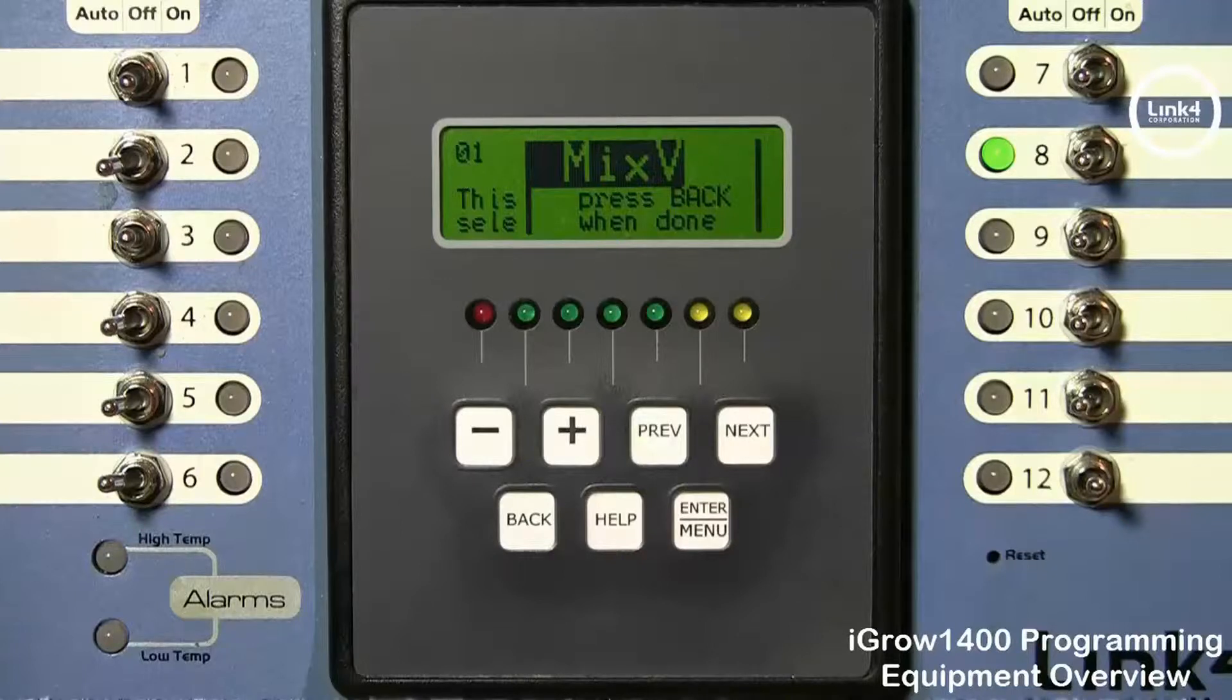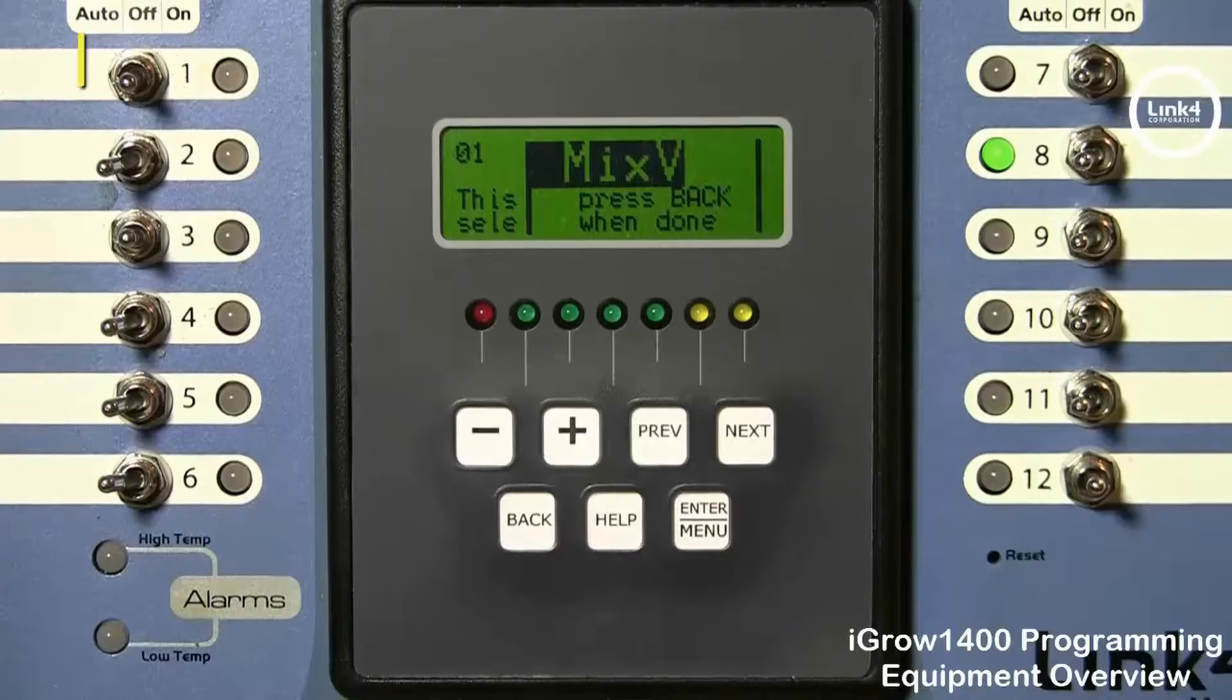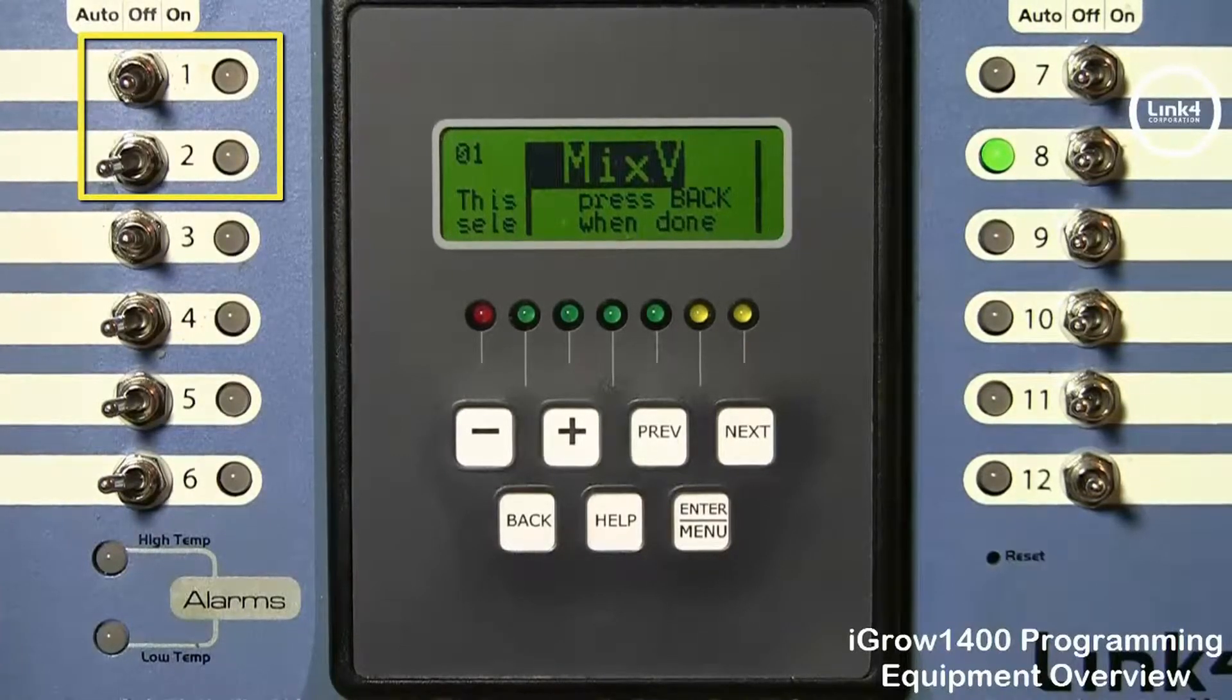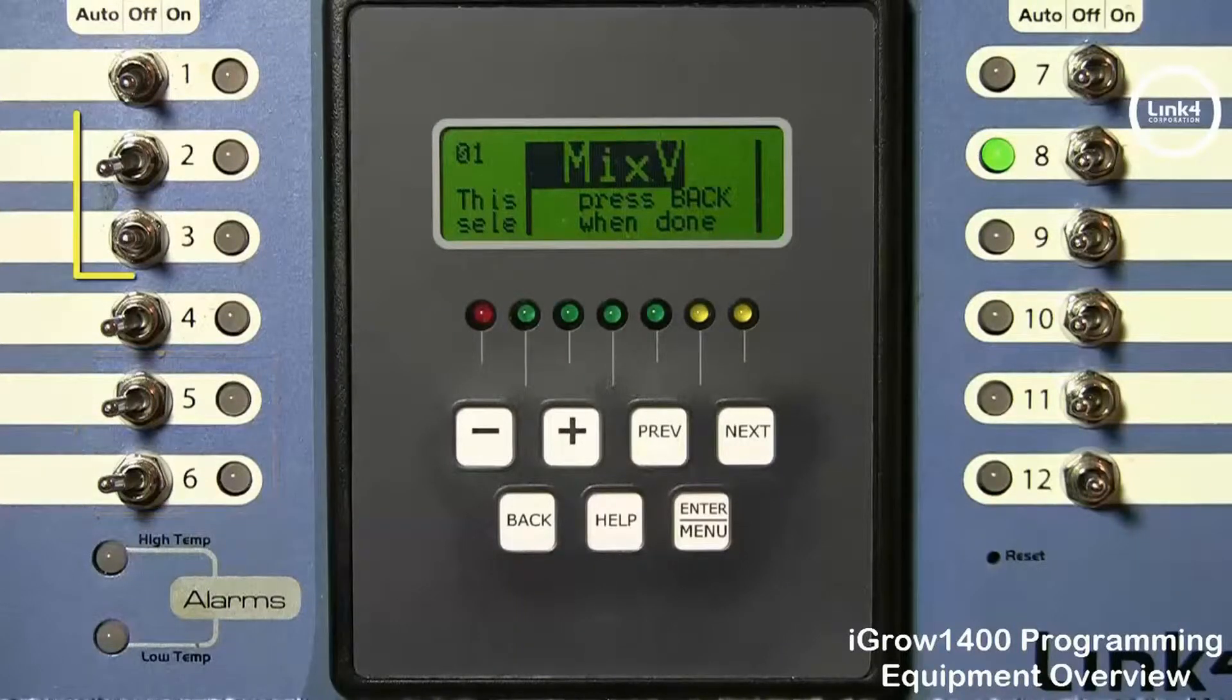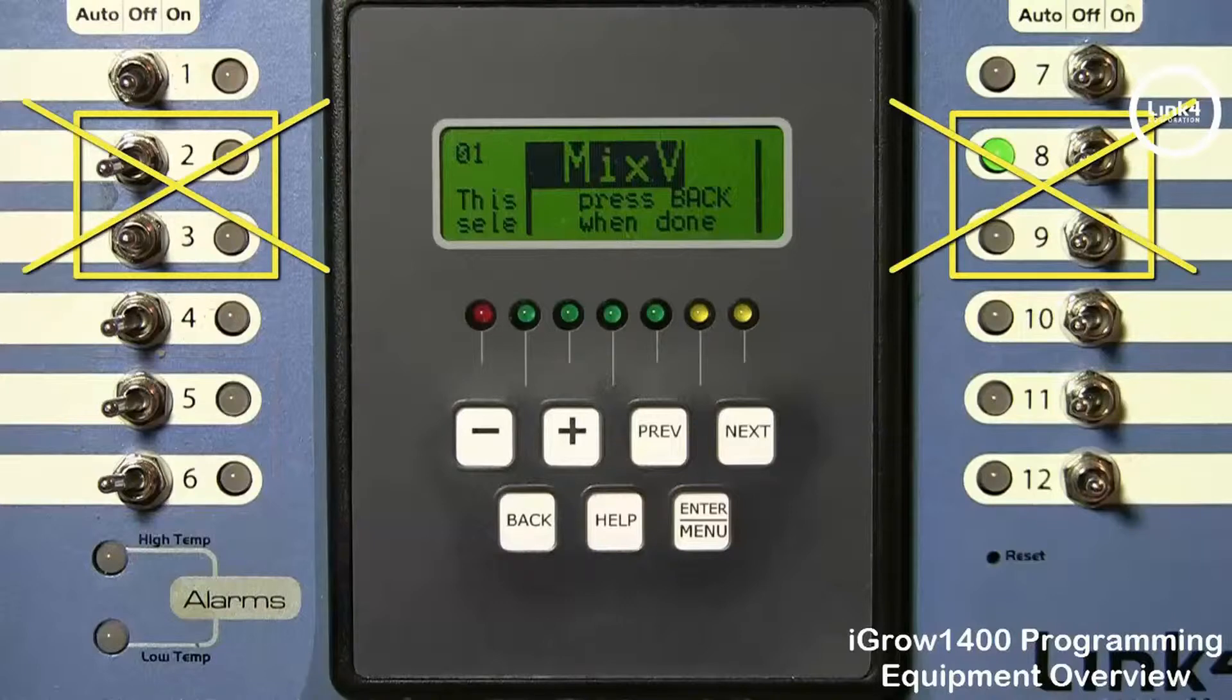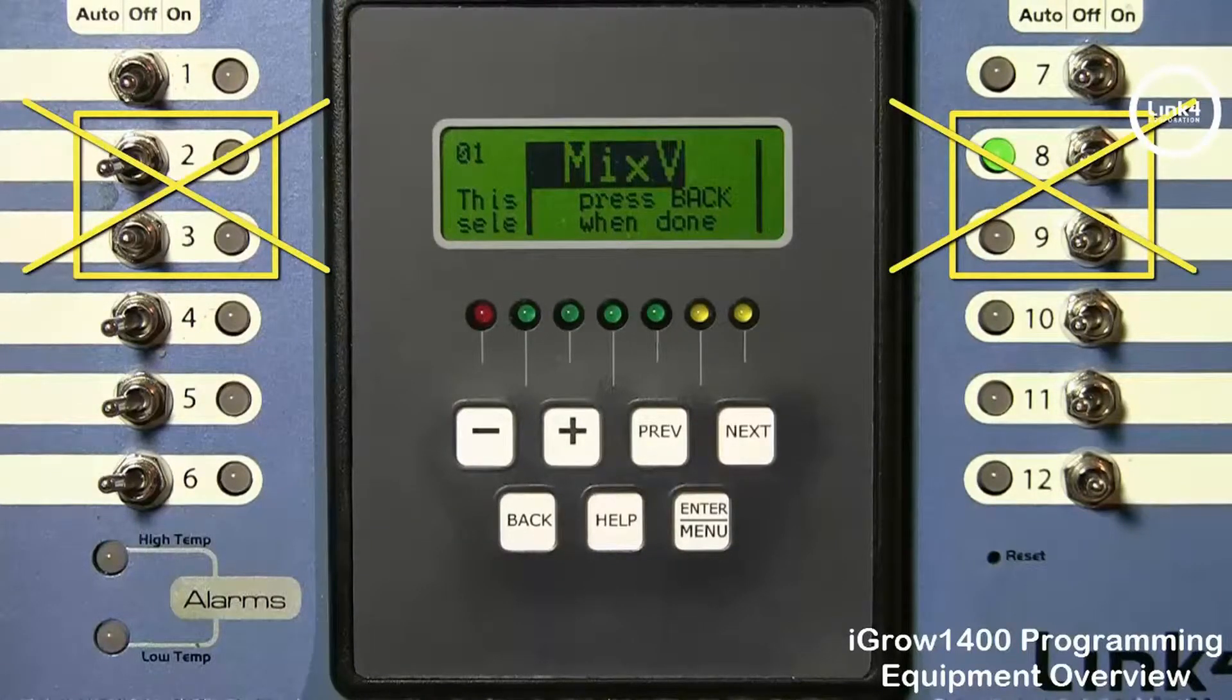The first channel being the odd number and the second its neighboring channel the even number. For example you can have 1 and 2, 3 and 4, 5 and 6. These are acceptable pairs but like 2 and 3 and 8 and 9 are not acceptable pairs.